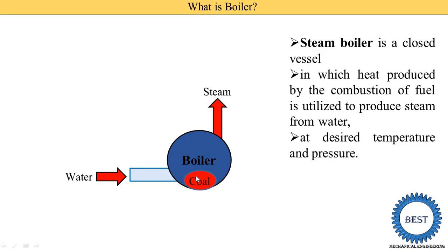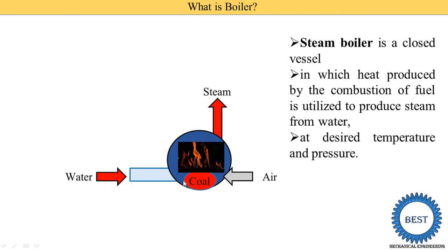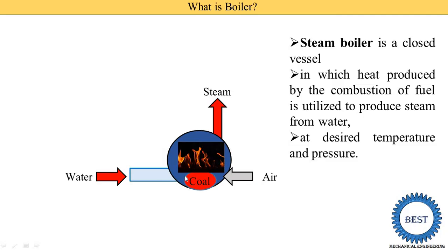Here we consider coal as the fuel. For combustion of coal, we require some air and a spark for initial combustion. When the fuel, air, and one spark are initiated, combustion starts. Due to combustion, some heat is released, and this heat is absorbed by the water, which is then converted into steam.